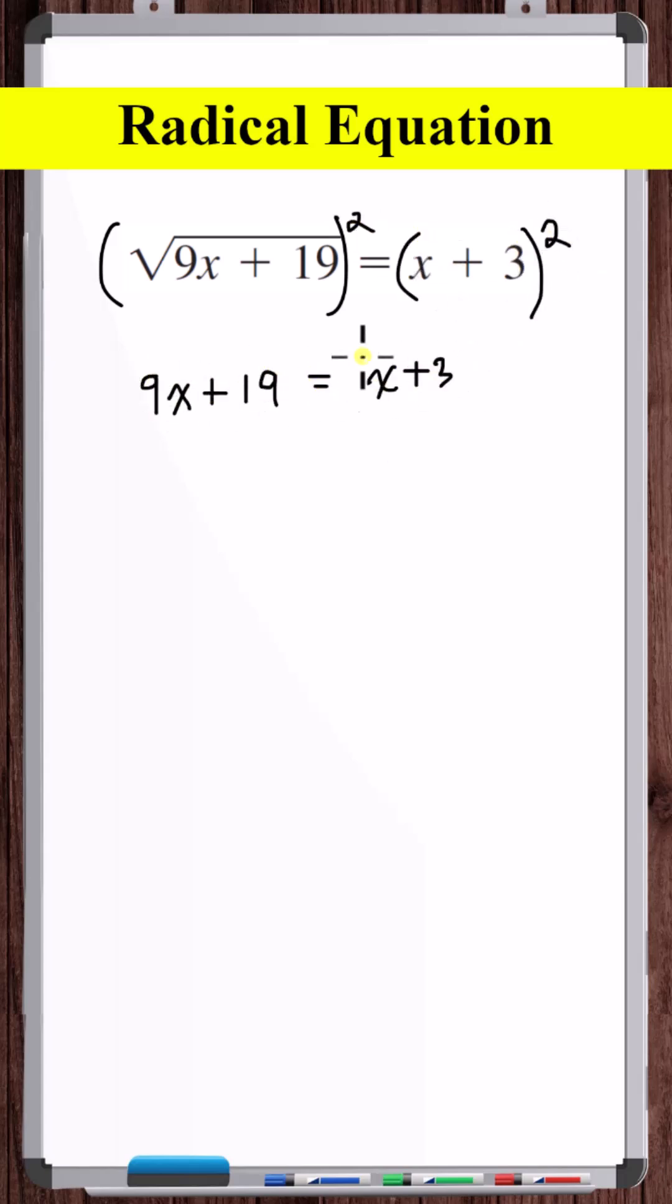So we're left with... Now let's expand this x plus 3 squared. We've got x squared plus 3x plus 3x. So x squared plus 6x plus 3 times 3, which is 9.